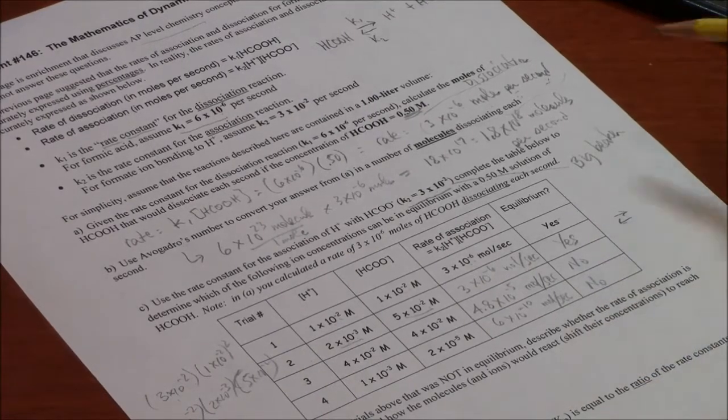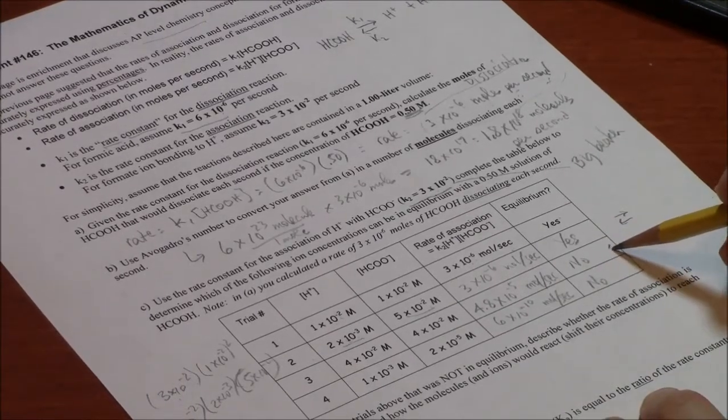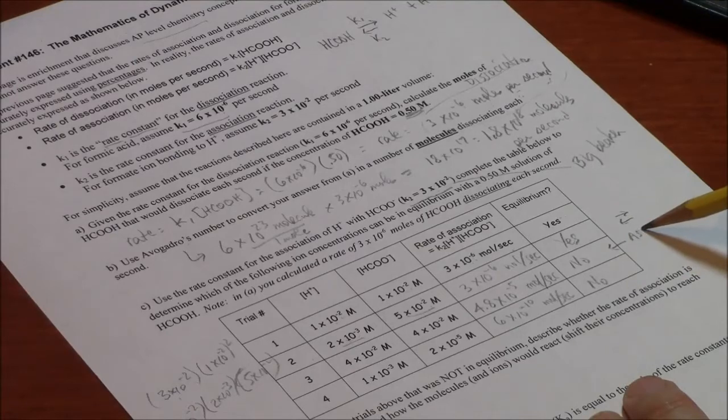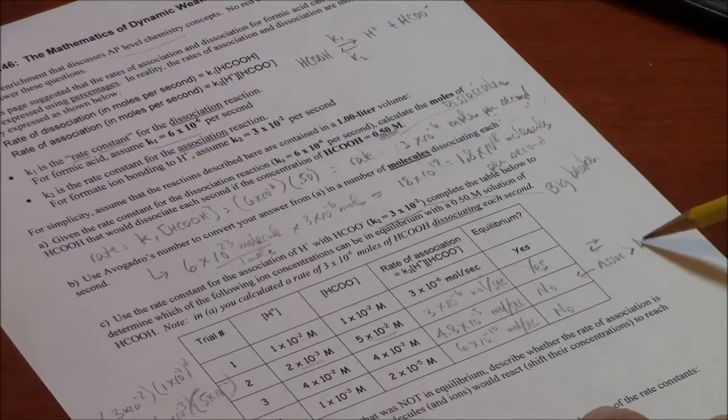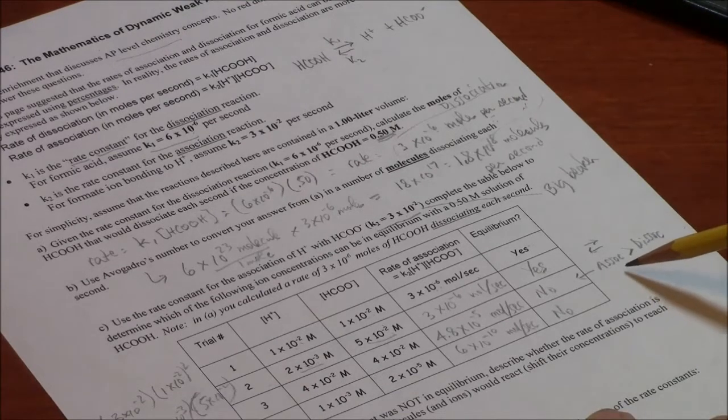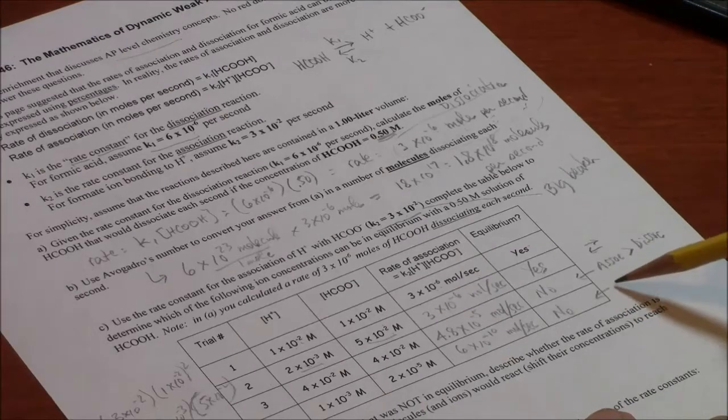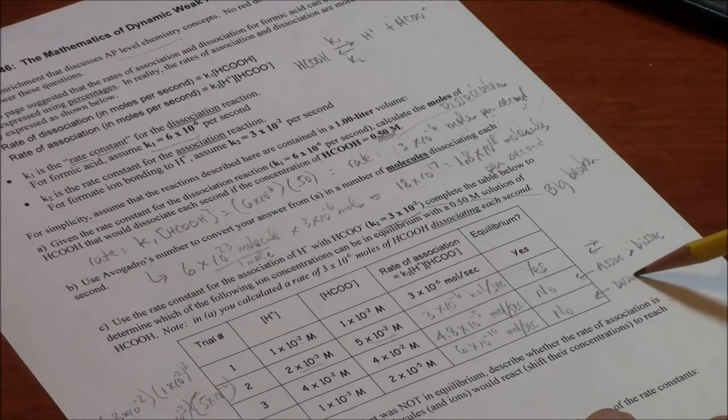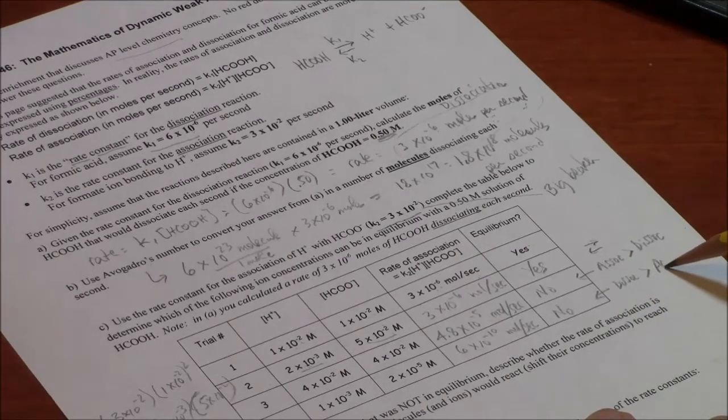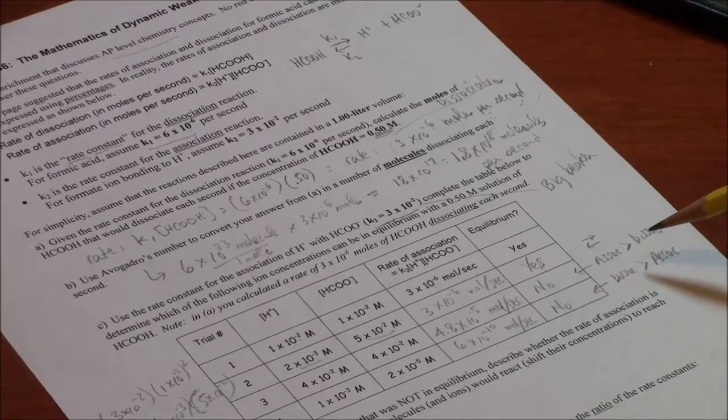And that leads to D here. If you analyze this well, you should say association rate is greater than the dissociation rate. And therefore, that's not equilibrium, and it has to shift to get there. Here, the dissociation rate is greater than the association rate. And that's, again, not equilibrium. It'll have to shift to get there.